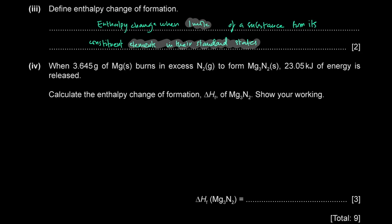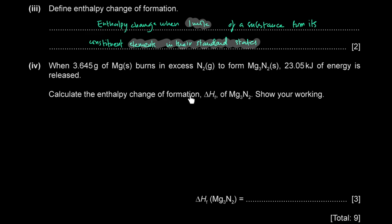When 3.645 grams of magnesium solid burns in excess nitrogen to form magnesium nitride, 23.05 kilojoules of energy is released. Calculate the enthalpy change of formation of magnesium nitride. We have the reaction: magnesium reacting with nitrogen to form magnesium nitride. Since we want to find the enthalpy change of formation, we need one mole of magnesium nitride: 3Mg + N₂ → Mg₃N₂.